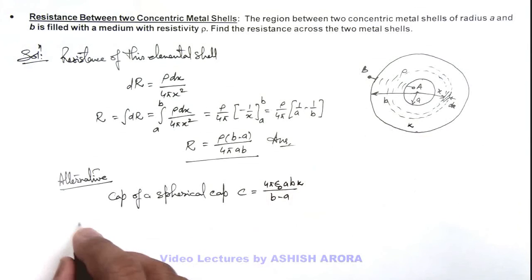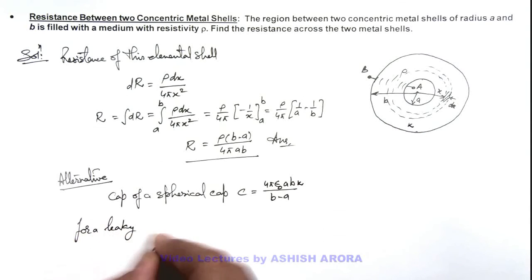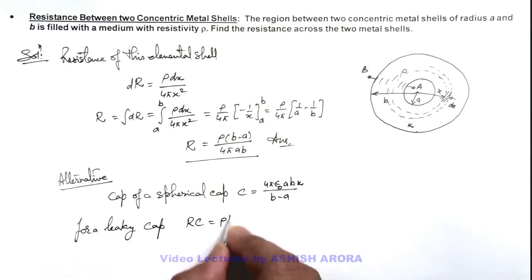And we also know for a leaky capacitor, the value of RC is given as ρk ε₀. So if we substitute the value of C over here, the resistance will be given as ρk ε₀ by C.